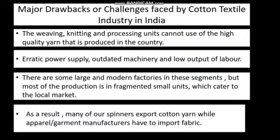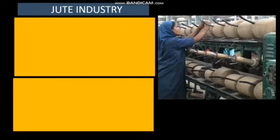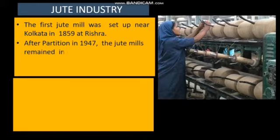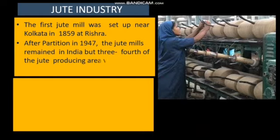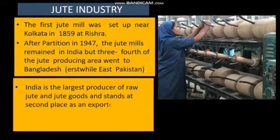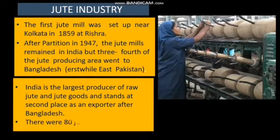The first jute mill was set up near Kolkata in 1859 at Rishra. After partition in 1947, the jute mills remained in India but three-fourths of the jute producing areas went to Bangladesh — then East Pakistan. India is the largest producer of raw jute and jute products, and stands at second place as an exporter after Bangladesh. There are 80 jute mills in India.